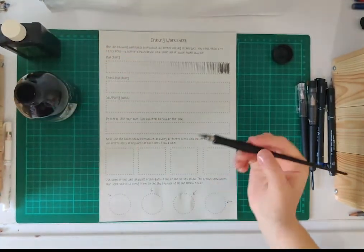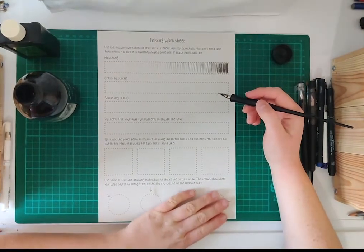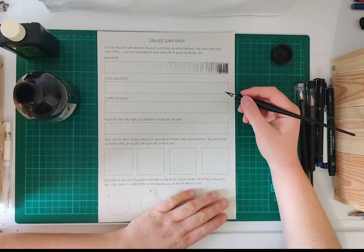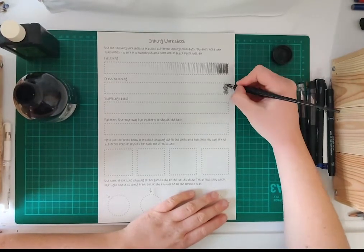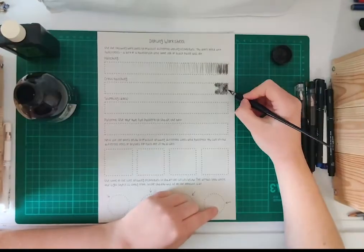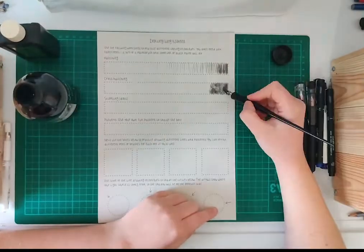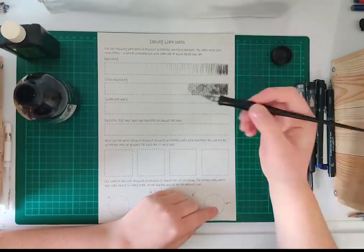The next box is for cross hatching. It's similar to the last one, but the lines go in several directions, crossing over each other to make a crisscross pattern. Start at the dark end and fill it in until it's almost completely covered. Then slowly work your way along, leaving more and more space until it's completely white at the other end.